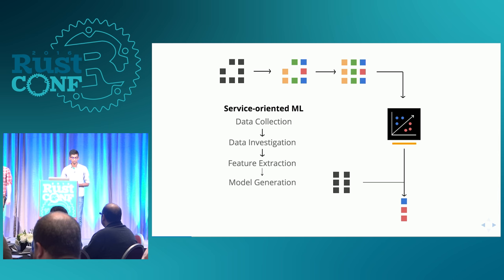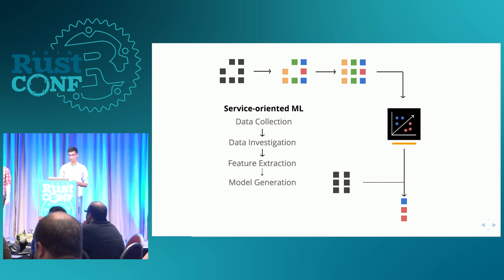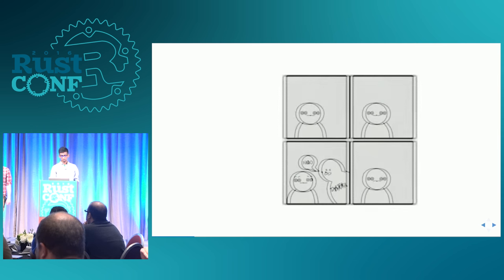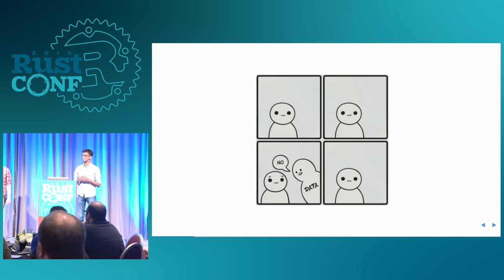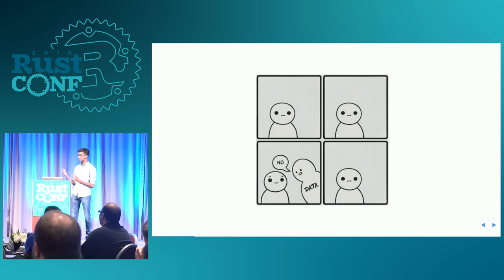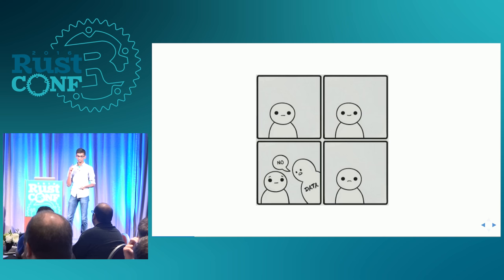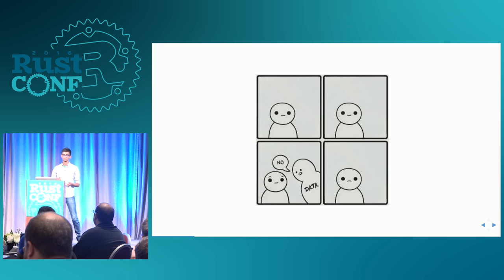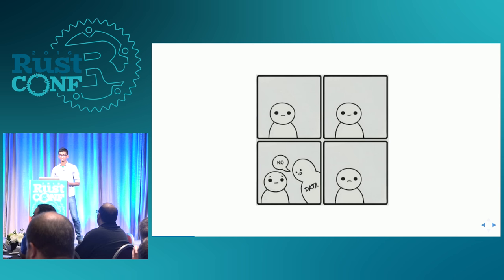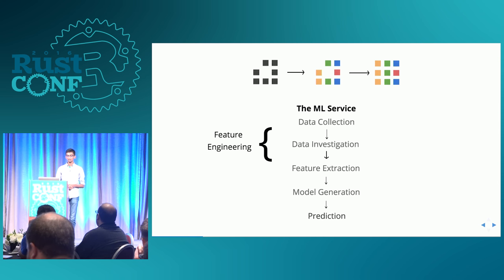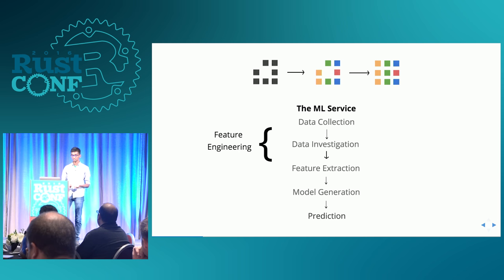The next step is model generation, where we generate a model that does classification, clustering, or pattern recognition and makes predictions on the fly. It seems like the model is the biggest aspect of this pipeline, but in reality, you're always working with horrible data — especially in fields like security. Your data is biased, dirty, with missing values. This means data scientists spend 99% of their time doing feature engineering: data collection, investigation, and feature extraction.